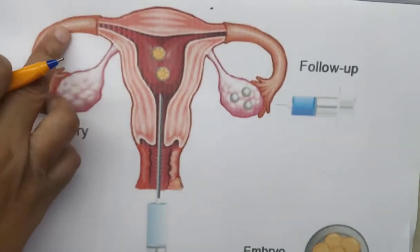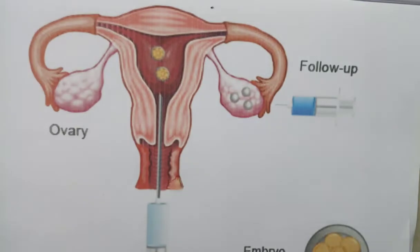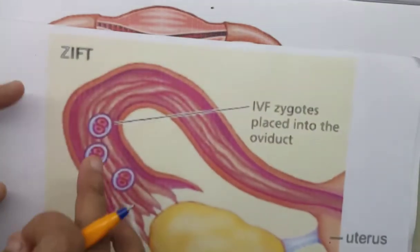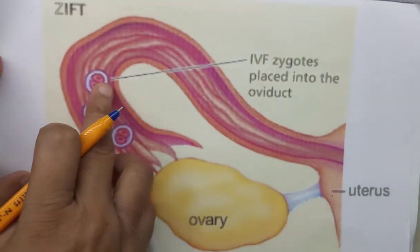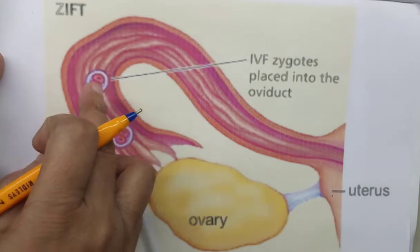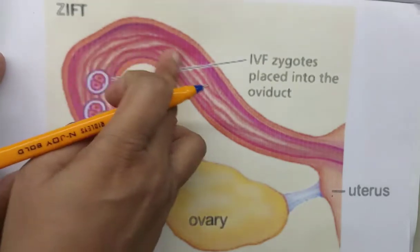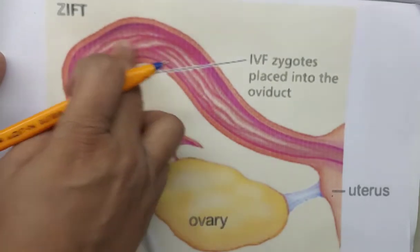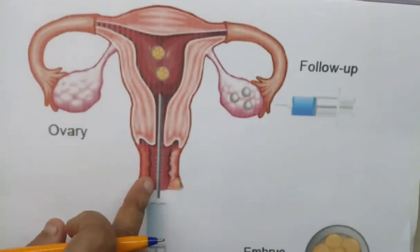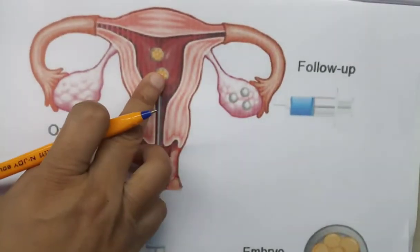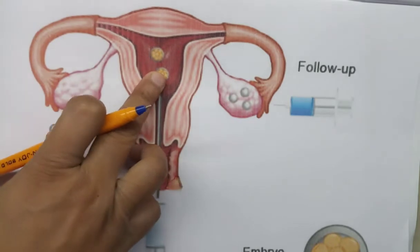In the previous picture, the zygote is introduced into the fallopian tube, but in Intrauterine Transfer, the embryo is directly introduced into the uterus. You can see this clearly.